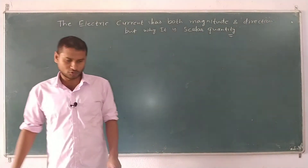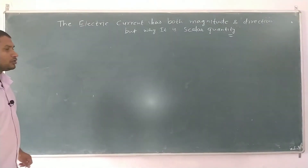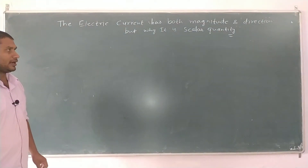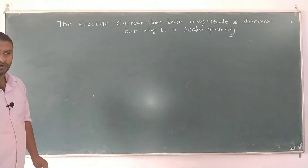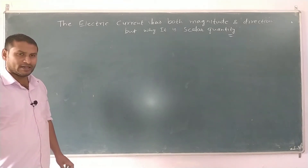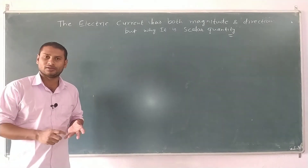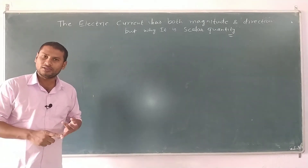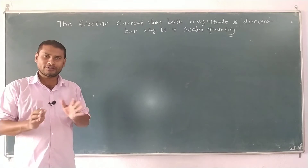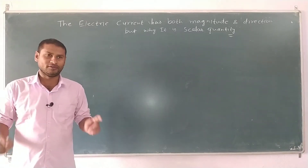Good morning students, good morning to all of you. Today's topic is: the electric current has both magnitude and direction, but still why is it a scalar quantity? The answer is that it does not follow the vector law of addition.